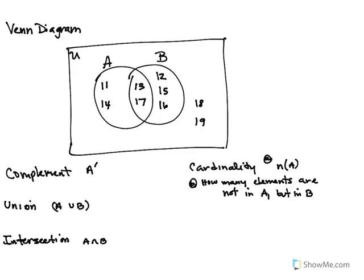Here we have a Venn diagram, which is basically just a visualization of some universal set. The square box or rectangle represents the universe. We can also write this in roster form — understanding the vocabulary is essential. Roster form is when you have your elements listed out separated by commas; it's essentially just a list of all of the elements in the universe.